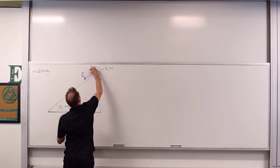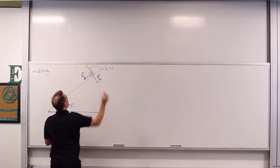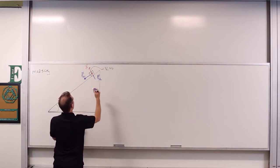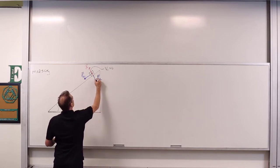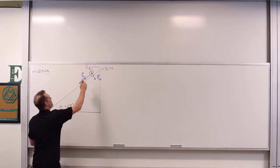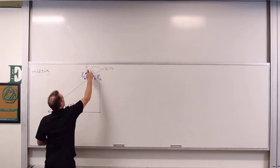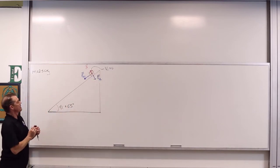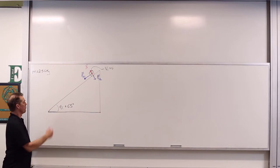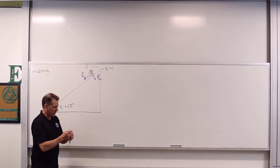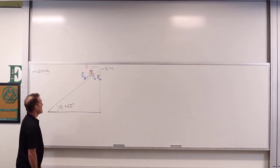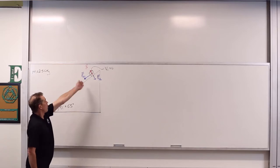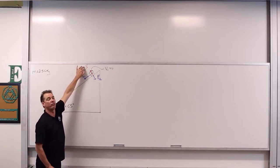We've also got the normal force acting. We've got these two forces — the parallel and perpendicular components. The first question is: what is the normal force acting as this object slides down the incline? We let go of it and it starts sliding down. The normal force is perpendicular to the incline.